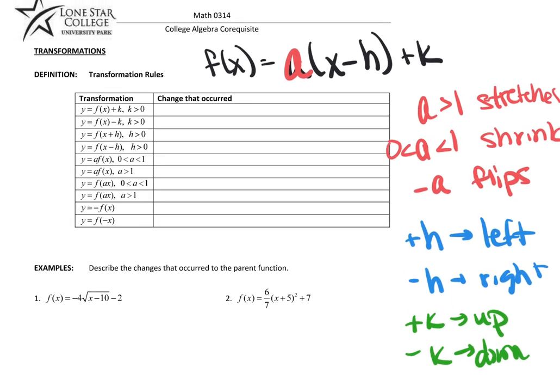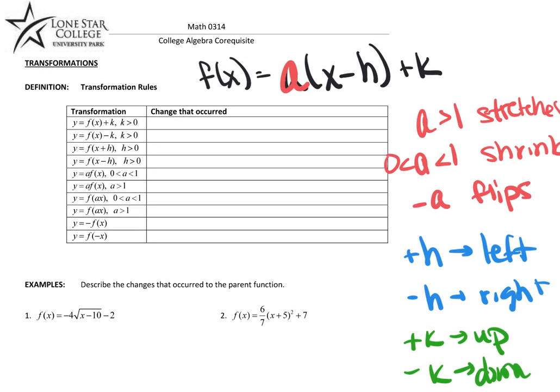So, you have all those rules right here, where it says, notice this one, positive k, this moves the graph up. Negative k moves the graph down. Positive h moves it left. Negative h moves it right.